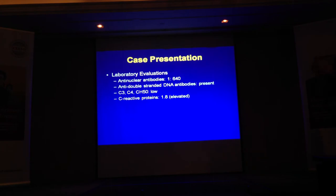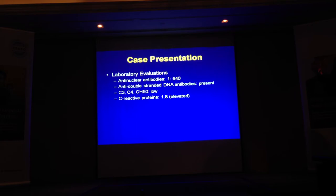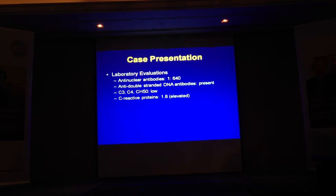The laboratory evaluation: the ANA is 1:640, which is quite a high titer. Why am I testing for anti-double-stranded DNA? I'm worried about SLE. What about complement levels? SLE consumes complement. What are the two most common complement-consuming diseases? SLE and Wegener's. If you see complement low, when you treat them, the value will come back up. C-reactive protein tells me whether the process is systemically active.